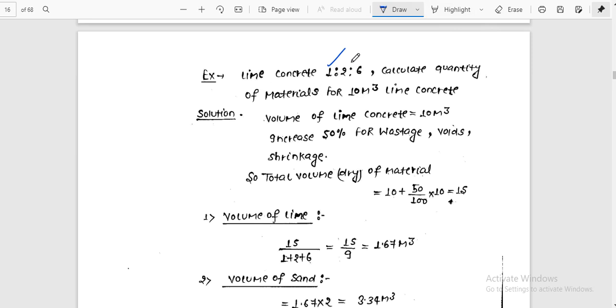Now a question: lime concrete ratio 1 is to 2 is to 6, meaning 1 lime, 2 sand, and 6 aggregate. Calculate the quantity of material for 10 meter cube lime concrete. I need to add 50%, this is the main concept. Volume of lime concrete is 10 meter cube, so 10 plus 50 by 100 into 10. If we have 10, I add 50% higher, equals 15.